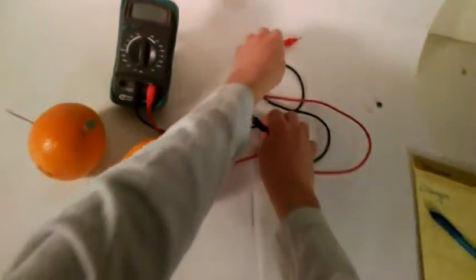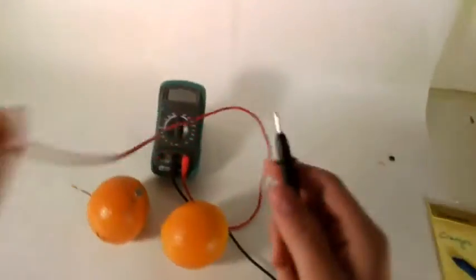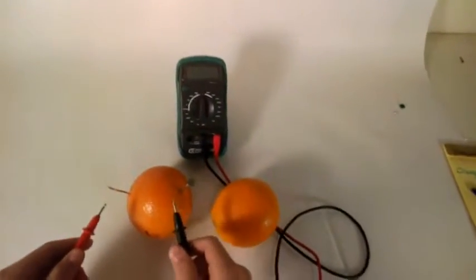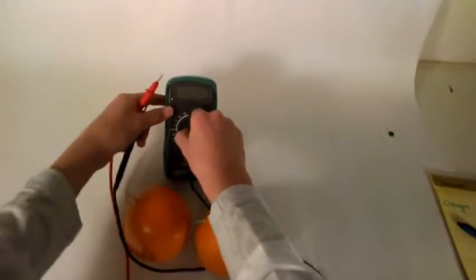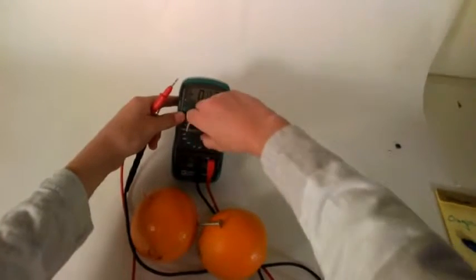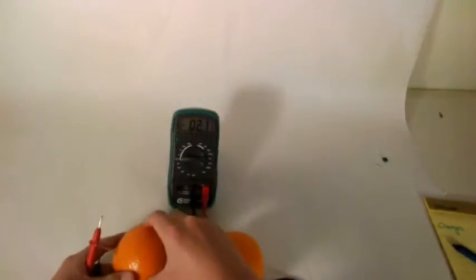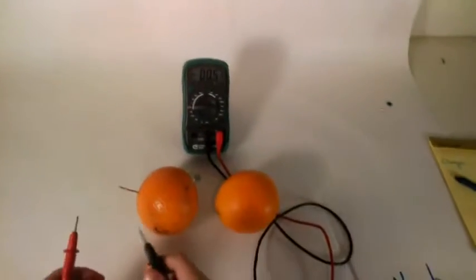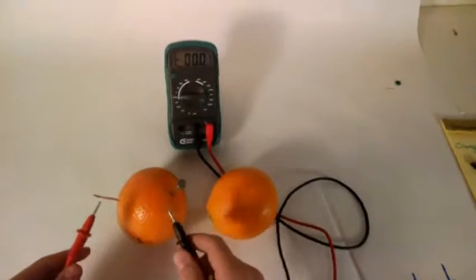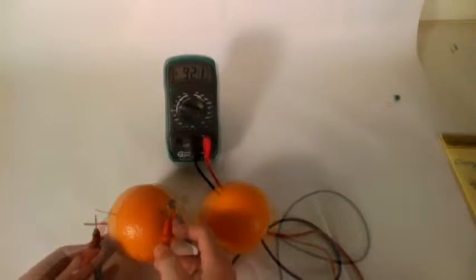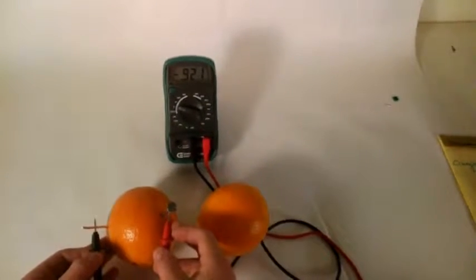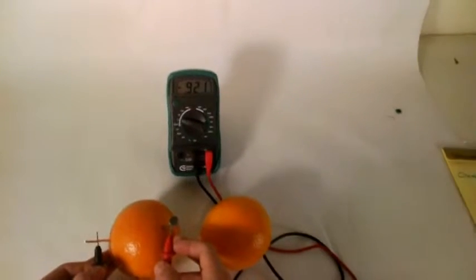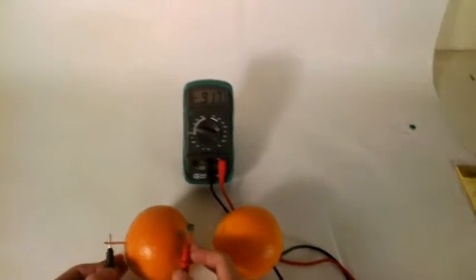Then, using the two prods on the voltmeter, we will measure how much—oh wait, first I'll turn the voltmeter on. We will measure how many volts are coming out of this orange. So, 0.921 volts. So that's almost one volt.